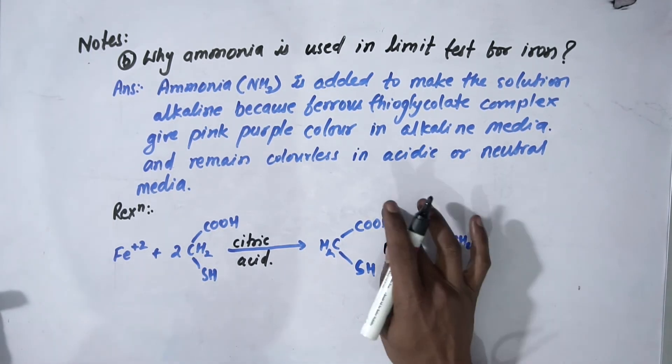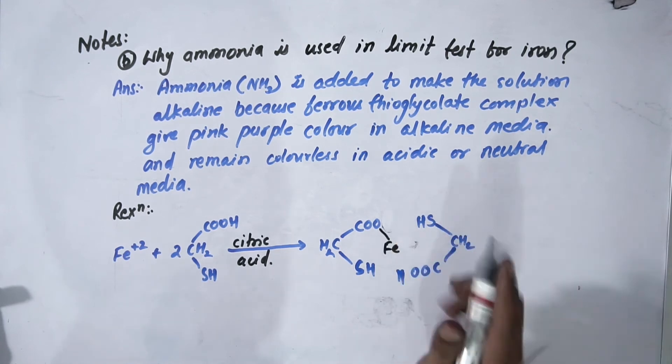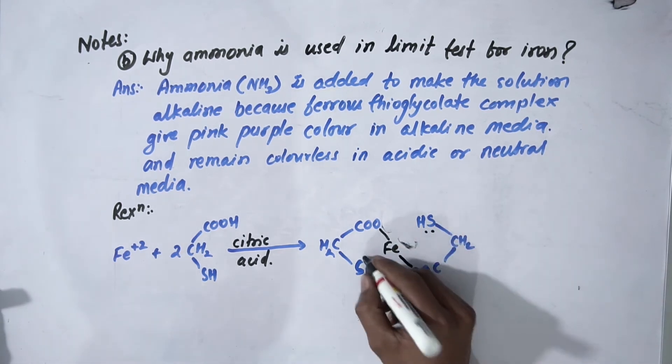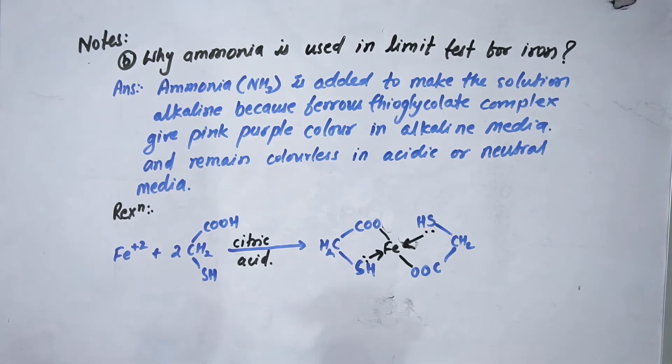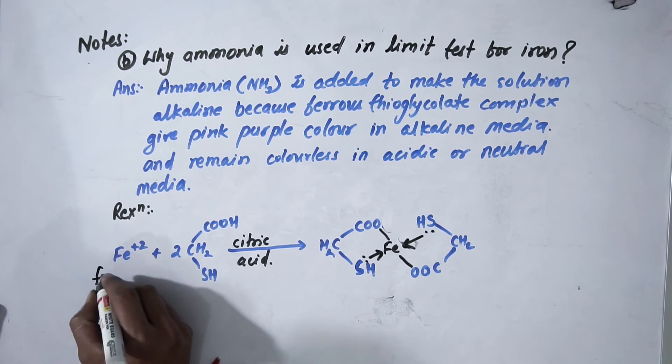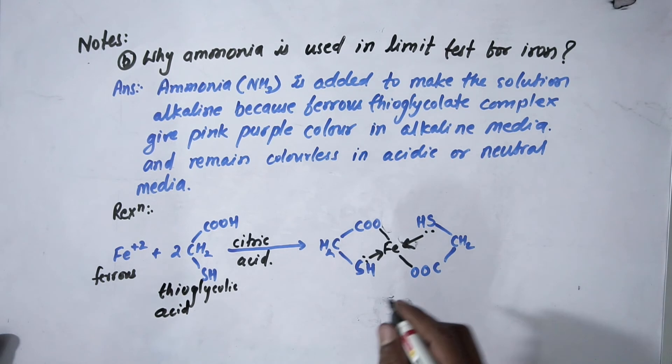Remove the hydrogen of the carboxylic group and make a bond with ferrous. Similarly, from the other carboxylic group and the sulfur—which has lone pairs—they will share with the iron and we will get a complex like this. Now let's write the name: this is ferrous with thioglycolic acid,